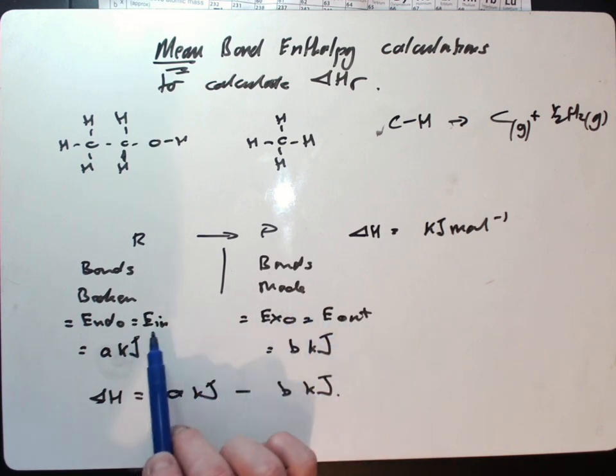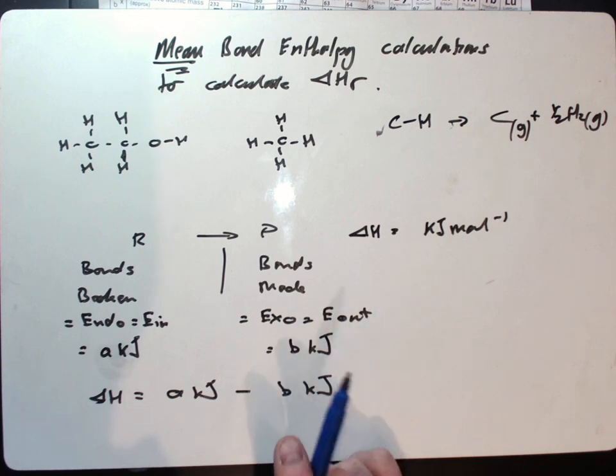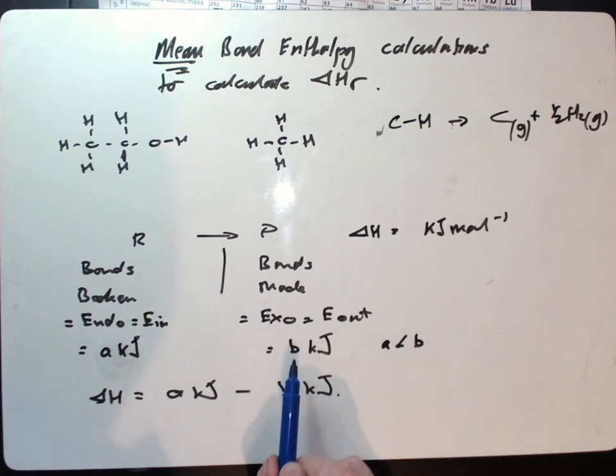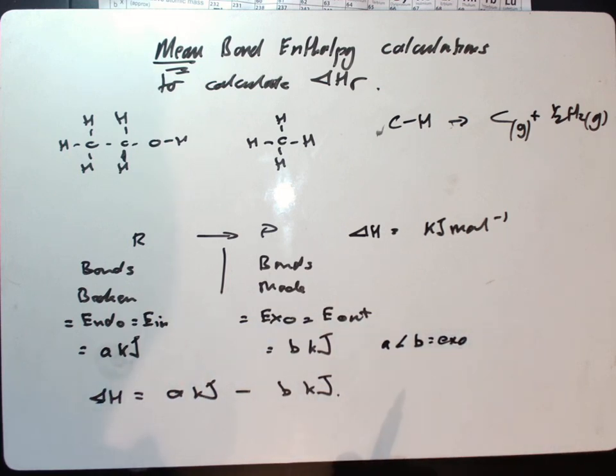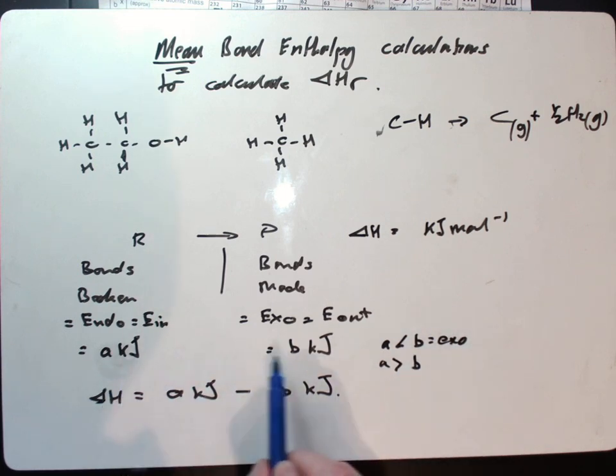You can have an endothermic and an exothermic process going on in all reactions. Let's say that exothermic process is B kilojoules of energy. If more energy is given out, so if A is less than B, then more energy is given out than is taken in. That would mean I have an exothermic reaction overall. Alternatively, if more energy is taken in, so if A is greater than B, then I have an endothermic reaction.